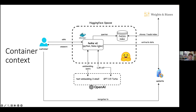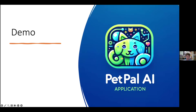We call GPT-3.5 Turbo, which returns a response. The response contains a link that can be clicked to navigate to the item that the model has retrieved. That's it — let's go with the demo.